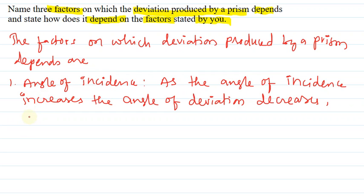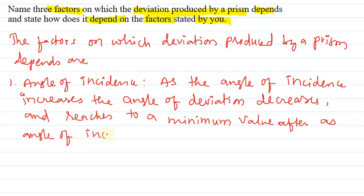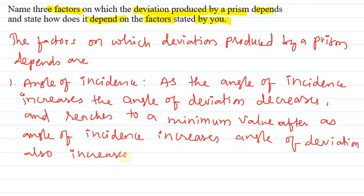And reaches to a minimum value. After, as angle of incidence increases, angle of deviation also increases. So when angle of incidence increases, angle of deviation decreases, then after reaching a minimum value, angle of deviation also increases. A U-shaped graph comes in which the least value represents the angle of minimum deviation.